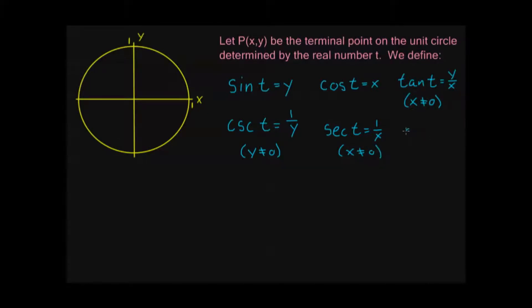And then finally we have cotangent of t. Cotangent is similar to tangent, but it's going to be x over y instead of y over x. So again, y must not equal zero. Just to make sure it's clear: all of these x's and y's are coming from the terminal point P that we talked about finding in the last section, based on t, which is the argument of these functions.